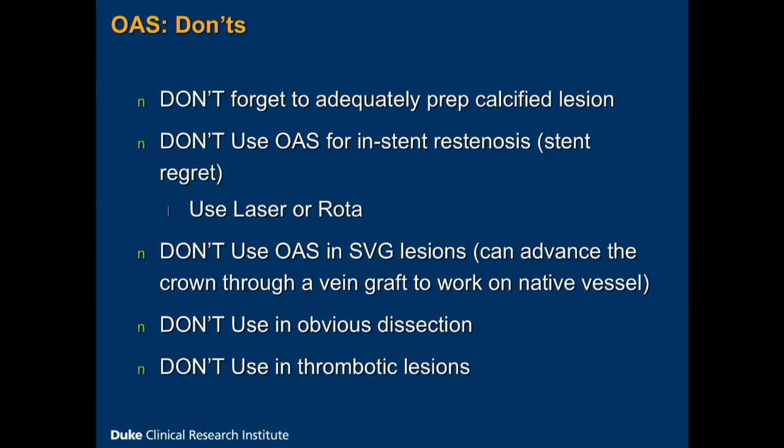The risk is obvious — the risk is perforation, so you have to watch out for that. Don't use OAS or even rotational atherectomy in a vein graft lesion. You can certainly advance both the rotational atherectomy burr and the crown through a vein graft to work on a native vessel. Don't use it with an obvious dissection — the traditional teaching is don't use any atherectomy with any kind of dissection, though practically, if you don't have an obvious angiographic dissection you're probably okay. And don't use any type of atherectomy in a thrombotic lesion because that will result in low flow or no reflow.